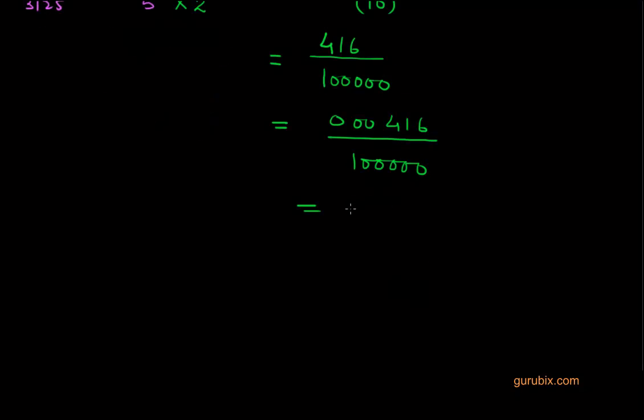Now we can easily find out the decimal expansion. We can write the decimal here because we have 5 zeros with 1 in denominator, so we shall count the 5 places from here: 1, 2, 3, 4, 5, and we shall put our decimal here. So this is the decimal expansion of 13 over 3125.